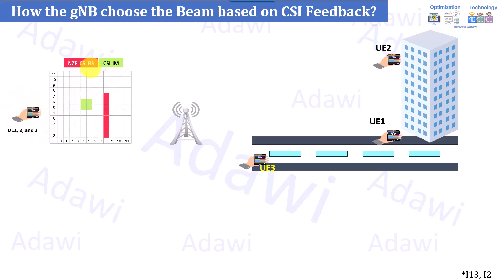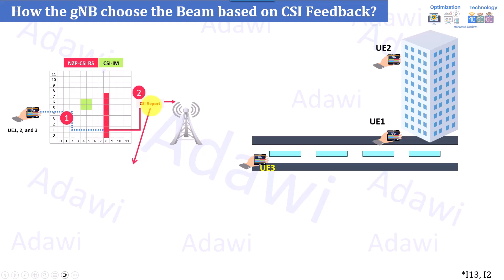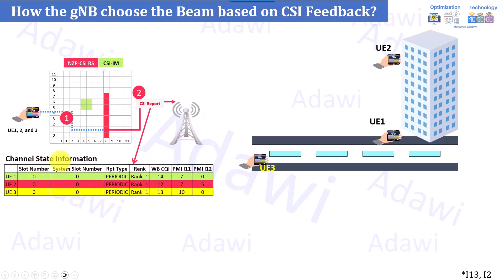All three users will measure the CSI-RS non-zero power resources and the CSI-IM, which is related to interference management. The first step is that the user measures the CSI-RS in order to obtain the pre-coding matrix and find the best PMI. Once all these users decode or read the CSI-RS resources — I'm assuming eight ports here — a CSI report is reported from those users to the gNB. The channel state information includes CQI, PMI, rank indication, and other information.